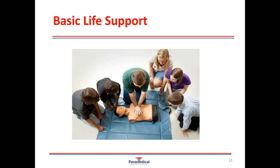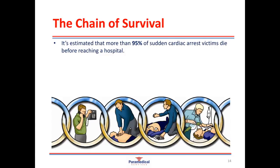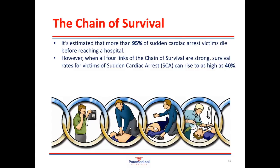Now that we have a basic understanding of anatomy, physiology and the differences between infants, children and adults, we're going to look at basic life support, which can be provided by any first aider or lay person. This is the process of following DRS ABCD and providing CPR. It's estimated that more than 95% of sudden cardiac arrest victims die before reaching hospital. However, when people are trained in DRS ABCD and the chain of survival links are strong, survival rates can increase to as high as 40%.